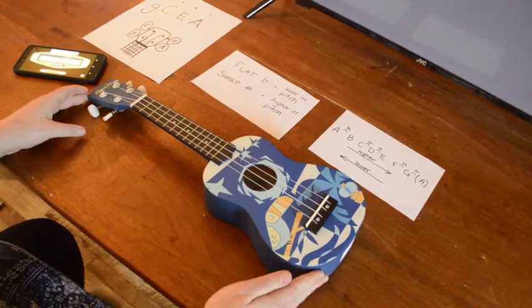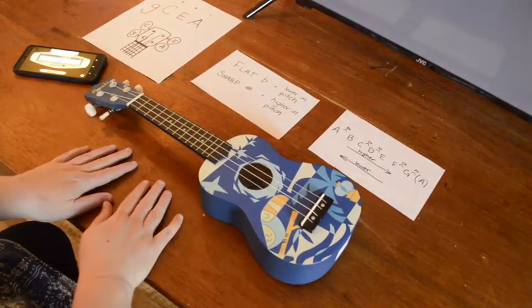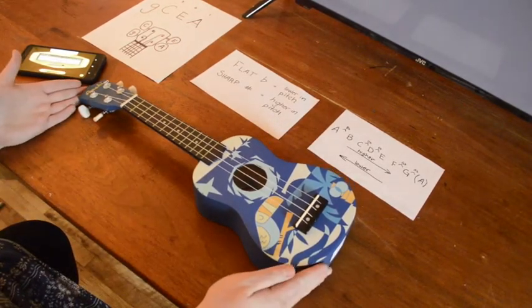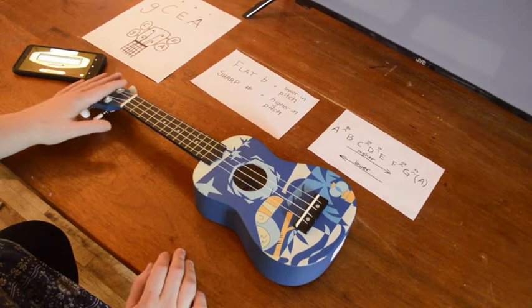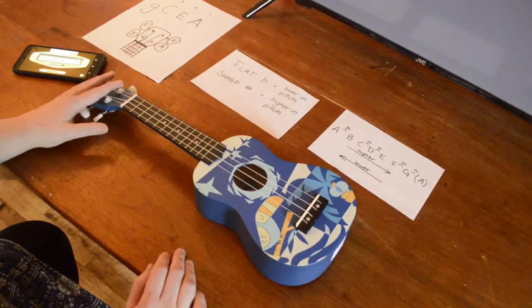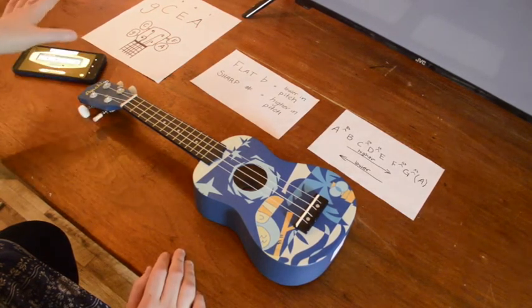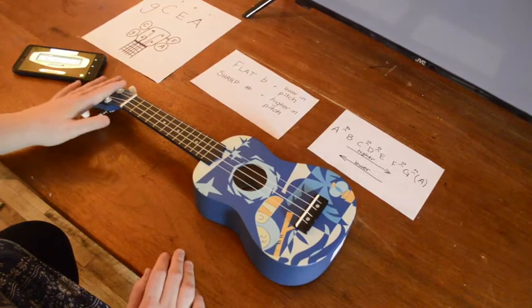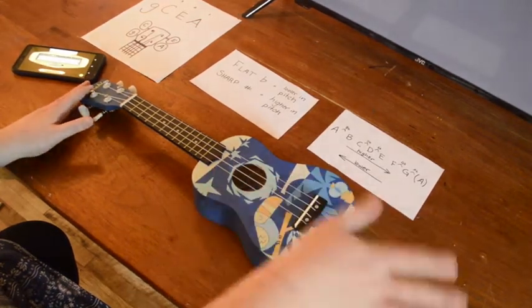So what I want you to do is first of all take your ukulele and put it down on a table in front of you, and I want you to have this part of the ukulele which is called the peg head to your left. So this peg head is on the left side and the body is on the right side.